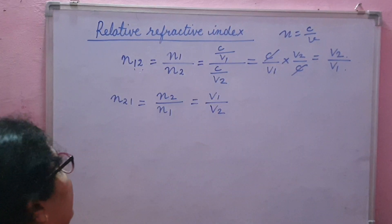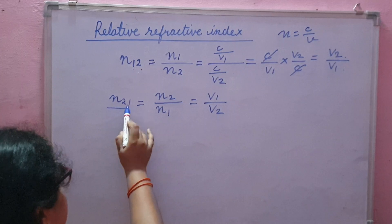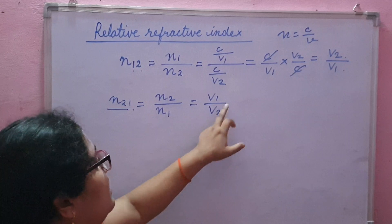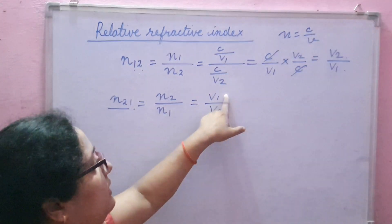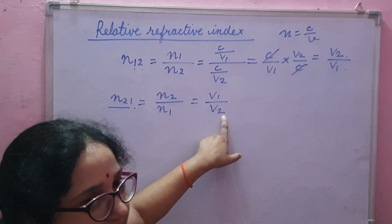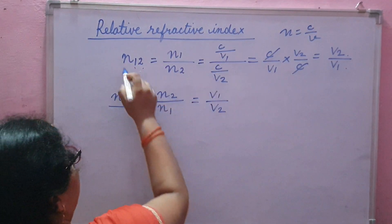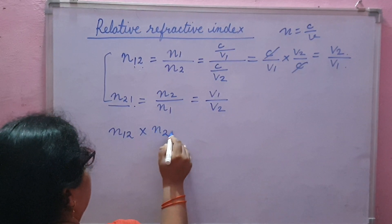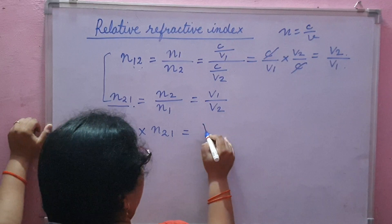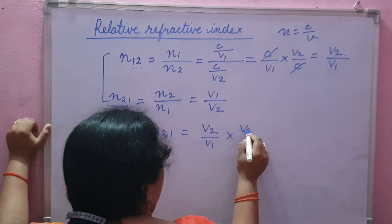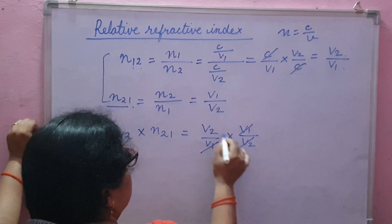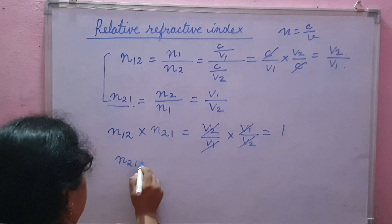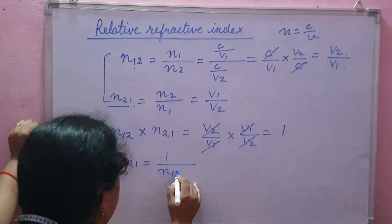So the refractive index of medium 2 with respect to medium 1 is equal to the ratio of speed of light in medium 1 to the speed of light in medium 2. If we multiply these two — N12 into N21 equals V2 upon V1 into V1 upon V2 — it equals 1. That means N21 is equal to 1 upon N12.